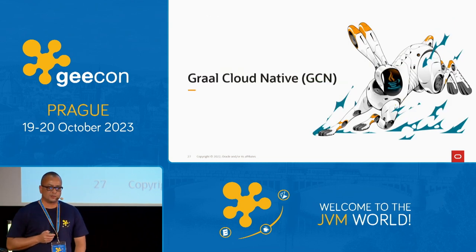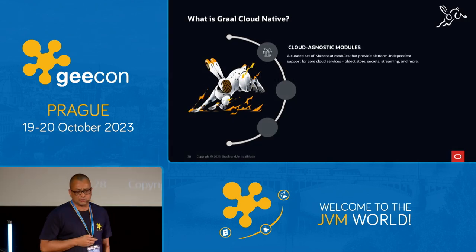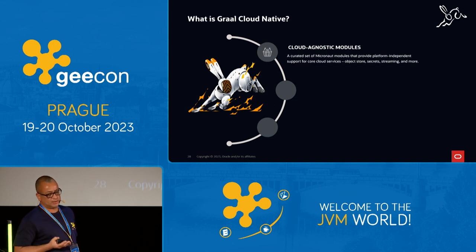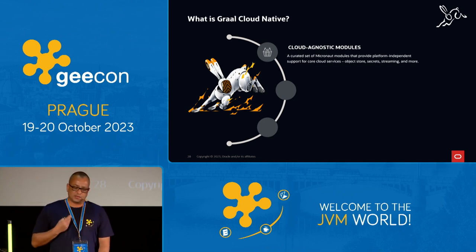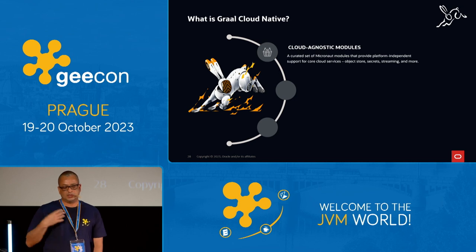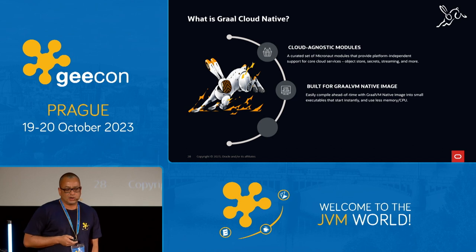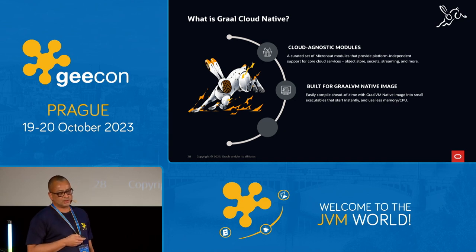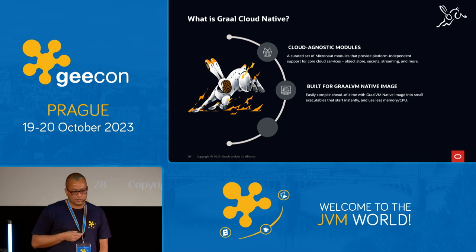Let's talk about GCN — GraalVM Cloud Native. It has cloud diagnostic modules, all clouds supported in a platform-independent way. You have object stores, secrets, streaming, and everything else. There's a VS Code extension to help you orchestrate this support, and built-in support for GraalVM Native Image — with AOT — resulting in better startup times, better memory utilization, possibly better performance in latency, response times, and throughput.